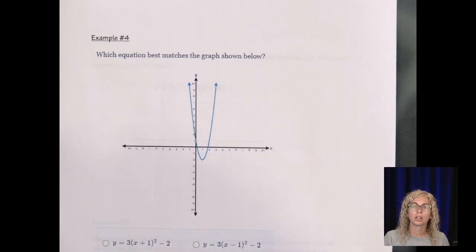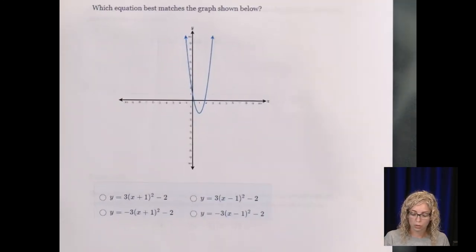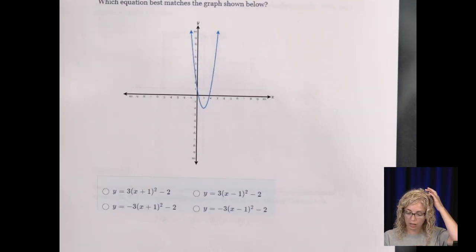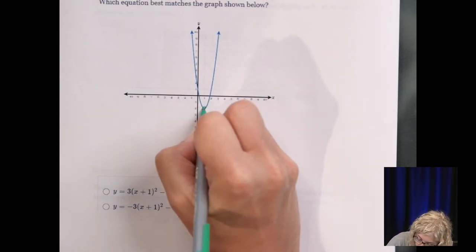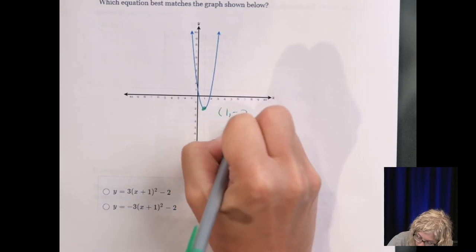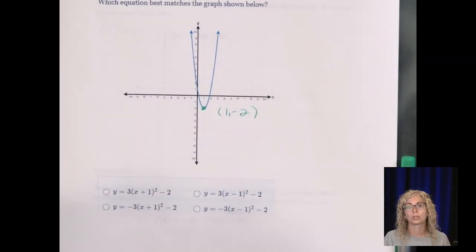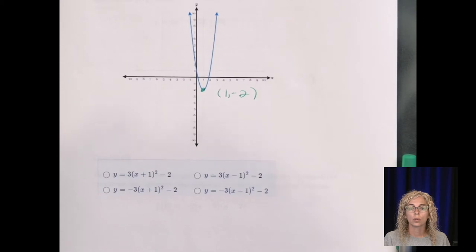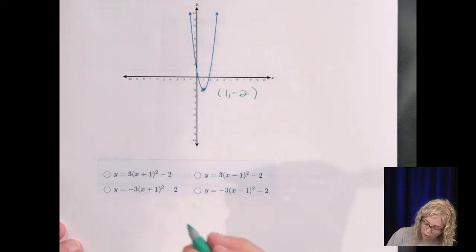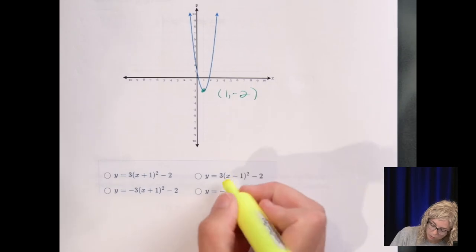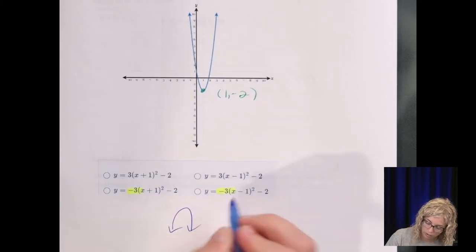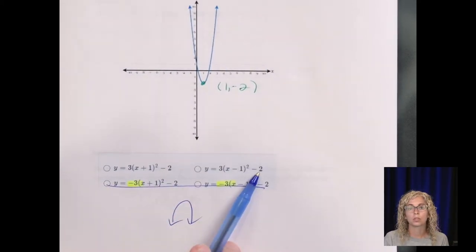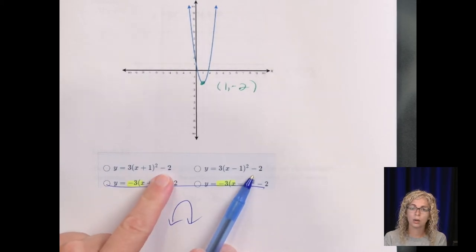All right. Which equation best matches the graph shown below? So with the vertex, let's note the coordinates. So vertex is right here. And that's 1, negative 2. So let's, again, use that method of getting rid of a couple answer choices because these are upside down, right? Because we have that negative A. So it's going to put it this direction. So it's either going to be this one or this one. So notice, this one matches, that one matches.